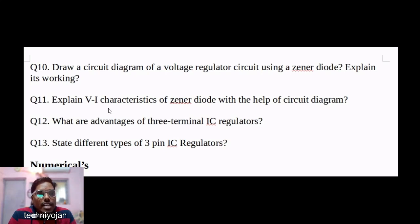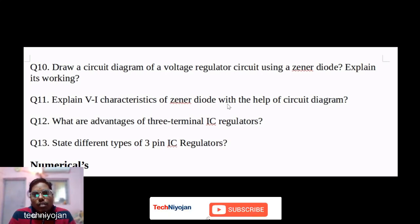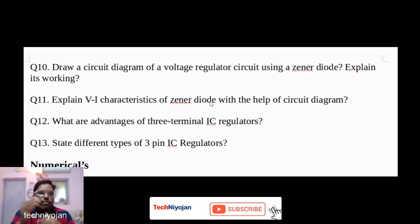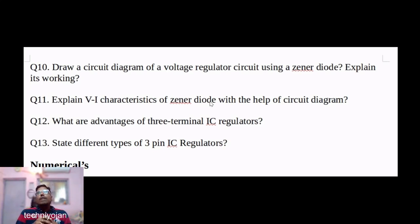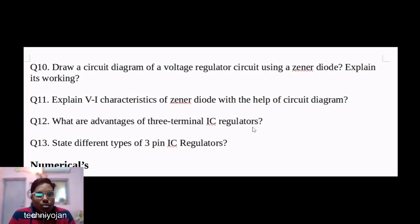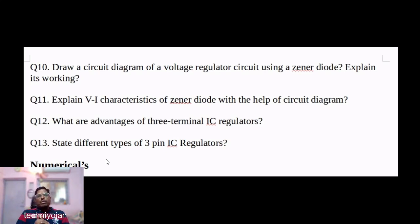Explain the working of the Zener diode voltage regulator. Also explain the V-I characteristics (voltage-current characteristics) of the Zener diode with the help of a circuit diagram — a graph will help explain this concept well. Then, what are the advantages of three-terminal IC regulators? Write four advantages. Also state the different types of three-pin IC regulators.